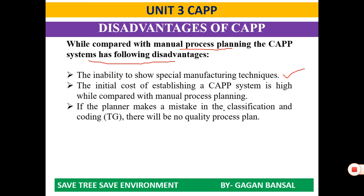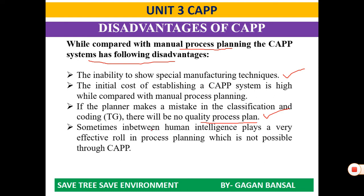Also, if the planner makes a mistake in the classification and coding, there will be no quality process plan. Though CAPP is an automated process, manual efforts are very much required in the initial stages and throughout. If the planner makes any mistake, the output quality is directly impacted. In manual process planning, runtime changes and assumptions can be made during the manufacturing process, which is not possible through CAPP. Sometimes, human intelligence plays a very effective role in process planning, which is not possible through computer-aided process planning.